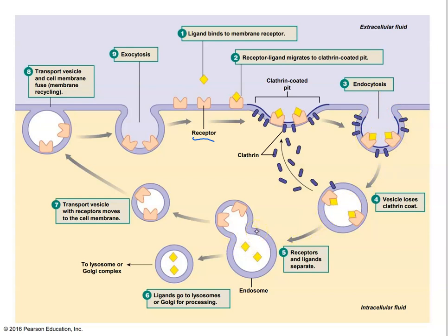We lost a little patch of membrane by pinching it off, so we can recycle that by doing exocytosis. Once we've taken off the ligand and processed it — whatever we wanted to do with it — we're recycling this membrane patch by fusing it back with the plasma membrane, returning that patch of membrane.